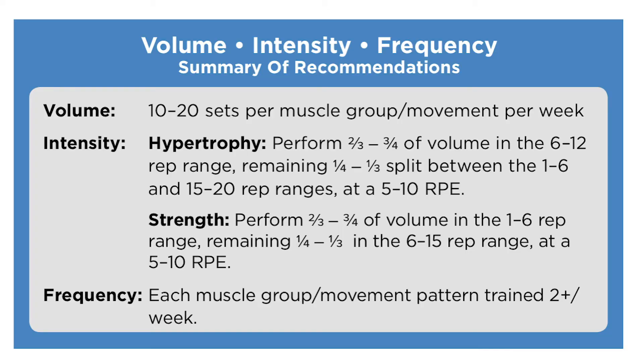When it comes to intensity, it depends on whether you want to train for strength or hypertrophy. Strength means increasing your one-rep maxes, and hypertrophy means building muscle mass and size. If you're after strength, do a majority of your training in the one-to-six rep range. If you're going after hypertrophy, you want to do anywhere from eight to 20 reps.